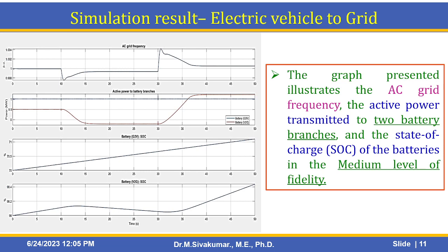The second graph is for the AC grid. This graph is obtained with the medium fidelity level. The graph illustrates the AC grid frequency, the active power transmitted to the two battery branches, and the state of charge in this medium level of fidelity.